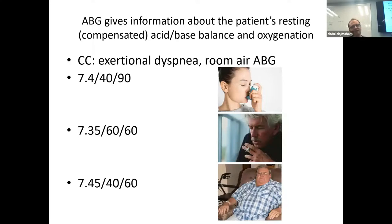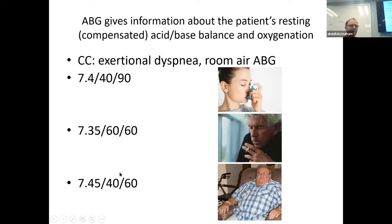You also get a room air ABG as part of PFT testing. This gives additional information for exertional dyspnea: a normal room air ABG might suggest asthma; a compensated respiratory acidosis with hypoxemia — the 60-60 club — fits a patient with chronic CO2 retention; and a respiratory alkalosis with hypoxemia corresponds to a 'blue bloater' with chronic bronchitis who is tachypneic to compensate for hypoxemia.